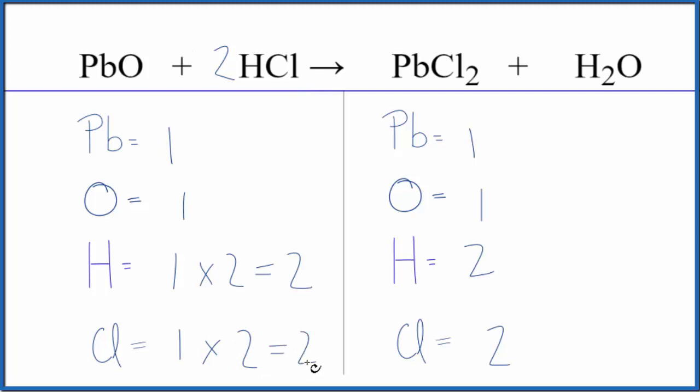That's really all we need to do to balance this equation. This is Dr. B with the balanced equation for PbO plus HCl, lead to oxide plus hydrochloric acid. Thanks for watching.